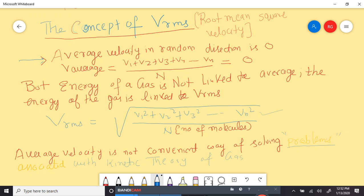So, in kinetic theory of gases, never use average velocity concept, always use root mean square velocity. It is the root mean square velocity which is to be used in kinetic theory of gases.